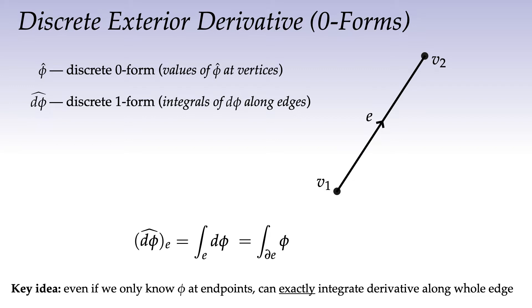Rather than integrating dφ over e, we integrate φ over the boundary of e. The boundary of the edge is just two points with opposite relative orientations, so we subtract: φ̂₂ minus φ̂₁. This is just the fundamental theorem of calculus — integrating the derivative of a scalar function along an interval. Even if the edge is really long, we get the exact right value with no approximation error.